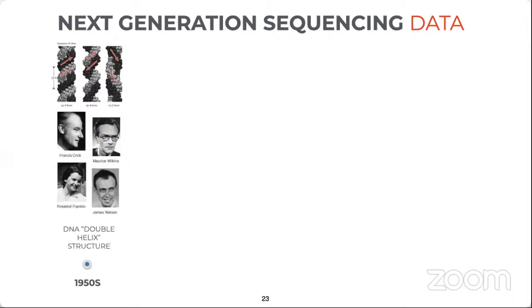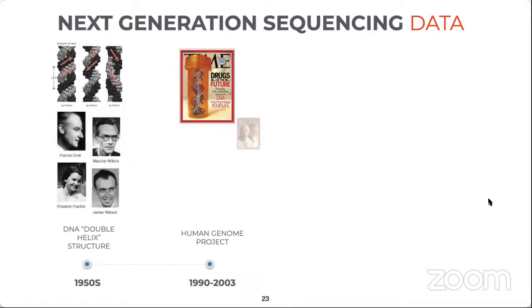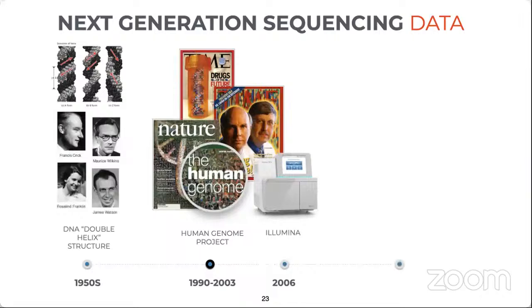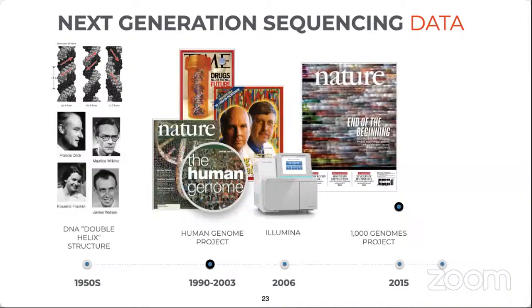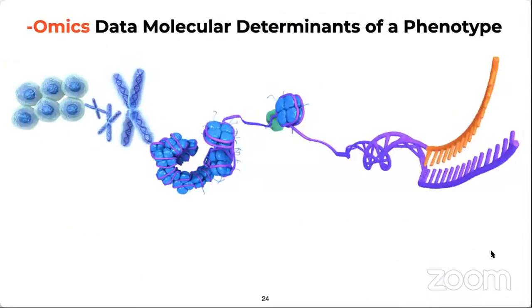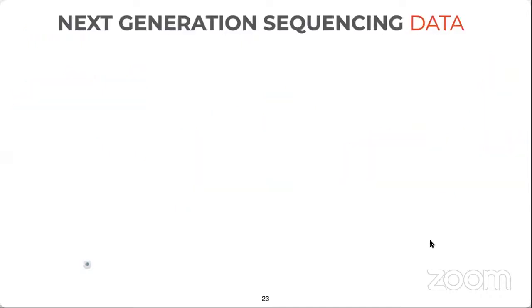We recently crossed the 70-year mark since the discovery of the structure and function of the DNA molecule, and it took about 50 years to sequence the first human genome. But soon after that, the technology developed so much that the availability of human genome sequences exploded rapidly. By around 2015, the 1000 Genomes Project brought a significant number of whole genome sequences into the research community.